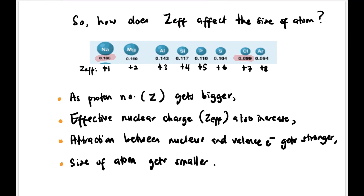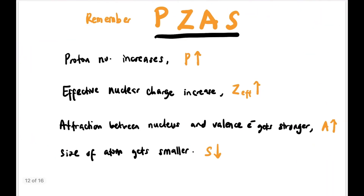So how does Zeff affect the size of the atom? As we go from Na (+1) to Mg (+2) to Al (+3) and so on up to Ar (+8), as the proton number gets bigger, effective nuclear charge also increases. This means the attraction between the nucleus and valence electrons gets stronger, so the size of the atom gets smaller. Remember the mnemonic PIZAZZ: Proton number Increases → Zeff Increases → Attraction between nucleus and valence electron is Stronger → Size gets smaller.